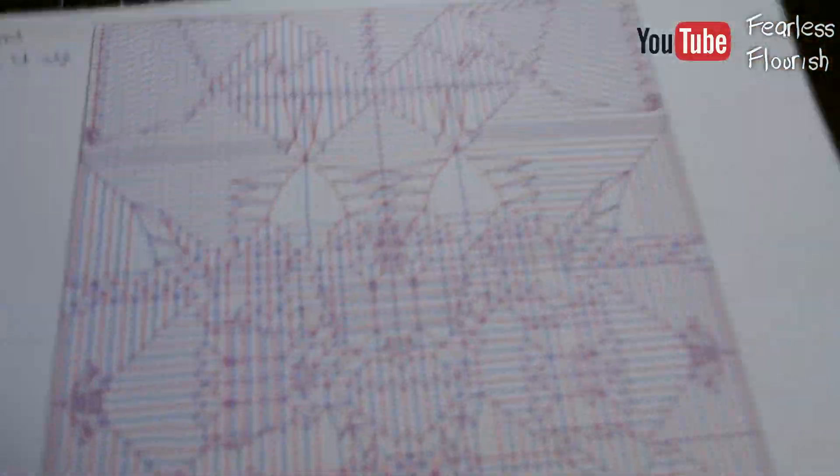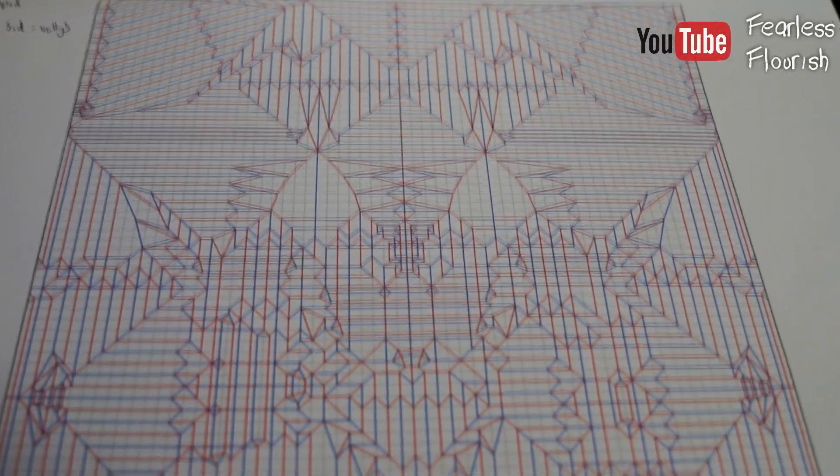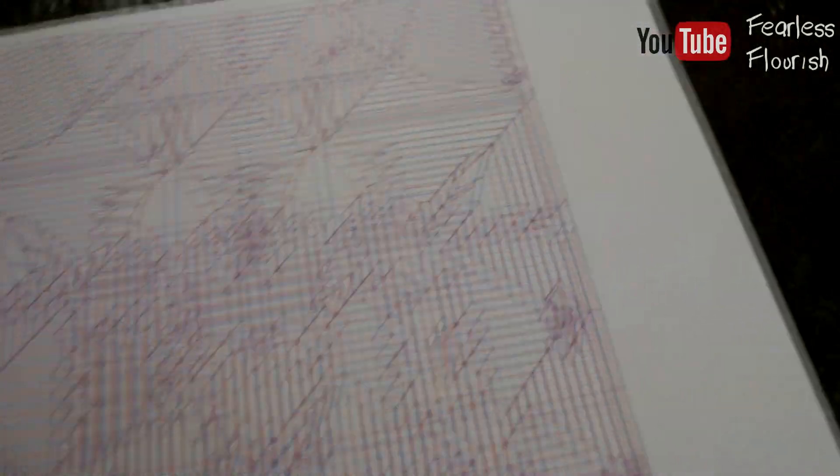Now the third one, if you're wondering what the third one is, it is the crease pattern but flipped. So I have on the computer, I've downloaded the crease pattern. I've put it into my image program and I've flipped it. So it's basically mirrored. Let me try and show you as an example. This is the normal crease pattern.